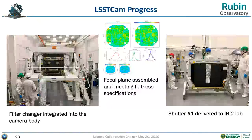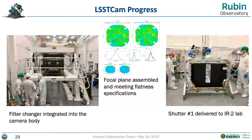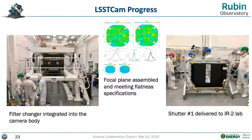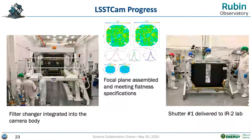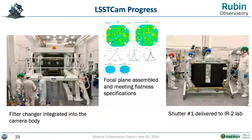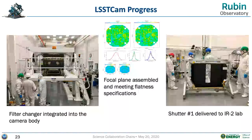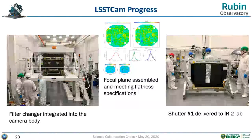The left panel shows the integration of the filter exchange mechanism into the camera main body — that's a big deal because the filter exchange mechanism was built and developed at IN2P3 in France, tested and accepted there, then shipped, delivered, and re-verified at SLAC. It's now ready as a first-article piece of the camera.